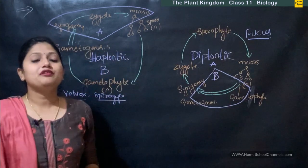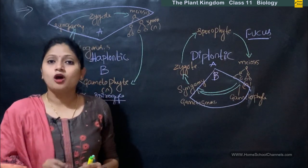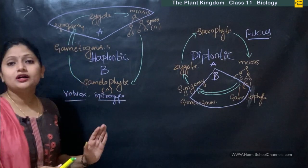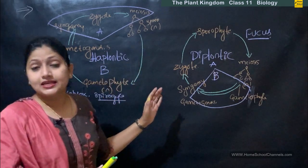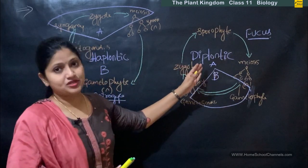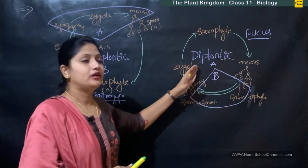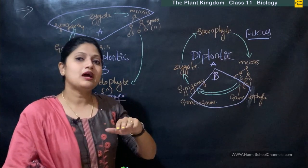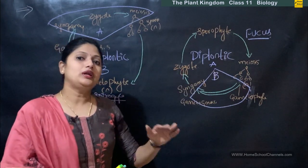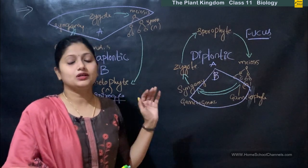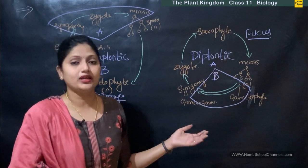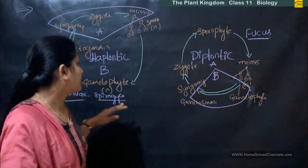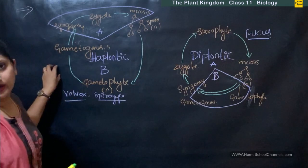If the diploid stages dominate in the life cycle, such life cycles are called diplontic life cycles. A few plants will have equal haploid as well as equal diploid stages — such life cycles are called haplo-diplobiontic life cycles. We will see all three life cycles. The first one is the haplontic life cycle.